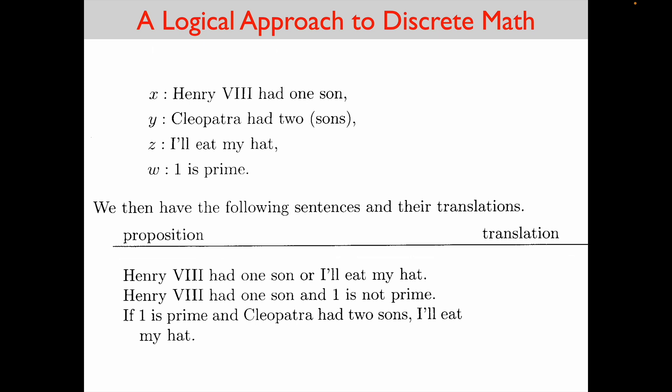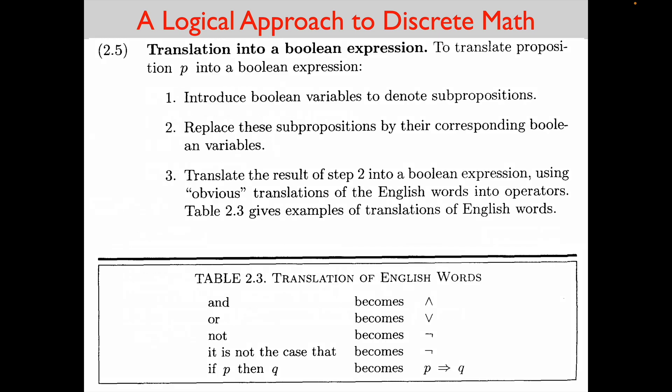Here are some examples. We identify sub-propositions as follows: the phrase 'Henry the eighth had one son' is abbreviated as lowercase x; 'Cleopatra had two sons' is abbreviated as lowercase y; 'I'll eat my hat' is indicated by lowercase z; and 'one is prime' is indicated by lowercase w. With these assignments, we have completed step one — introducing boolean variables to denote sub-propositions.